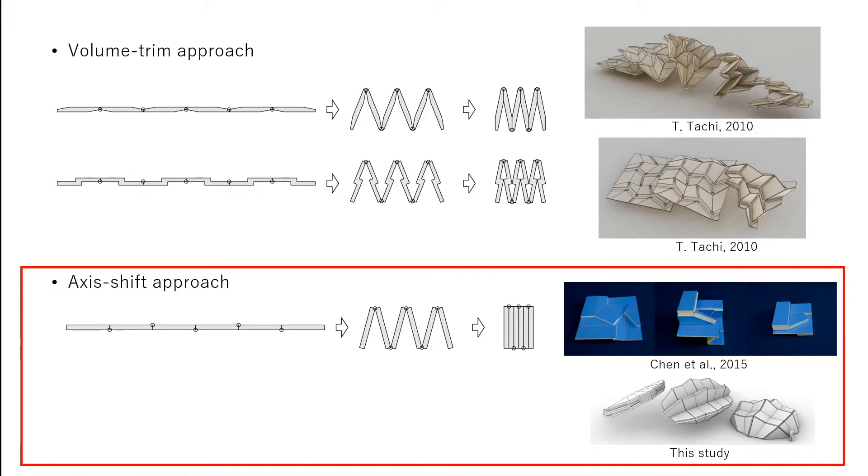The focus of existing approaches of thick rigid origami was limited to developable origami surfaces. However, for architectural applications, the developability of the entire surface is not necessary because the assembly of multiple parts is necessary due to the available size of the panel materials.